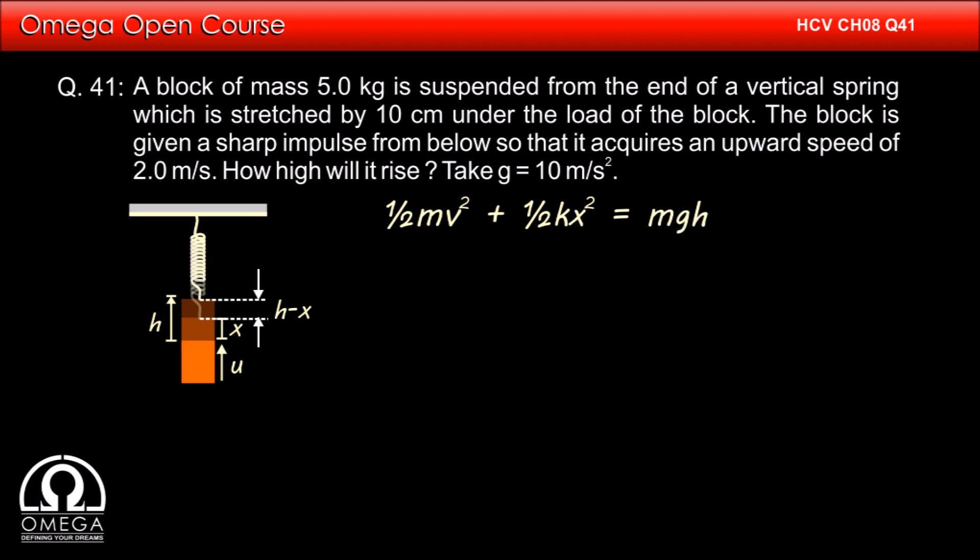At the highest point, the block is at height h from the reference point. Gravitational potential energy of the system is mgh. Since the compression in the spring at this position is h minus x, the spring potential energy of the system is half k into h minus x whole square.